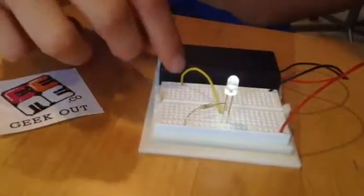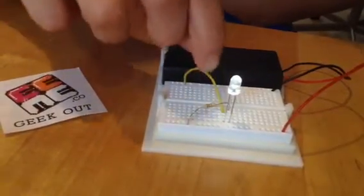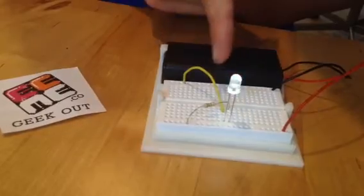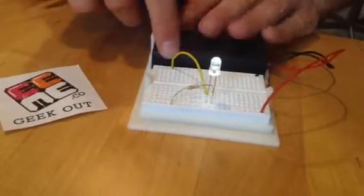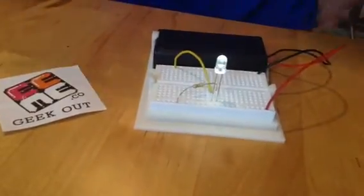That's what's making it light up. And this yellow wire here is connected to the negative side, so it's running over here down to the negative, completing the circuit.